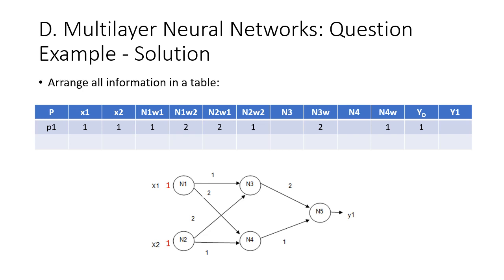A good habit when answering this type of problem is to arrange all the information in a table. For the first iteration, the input is one and one, and the desired output is one. The weight for neuron one has two values: weight one and weight two. Neuron two also has two different weights, with neuron two weight one and neuron two weight two mapped to their respective cells.